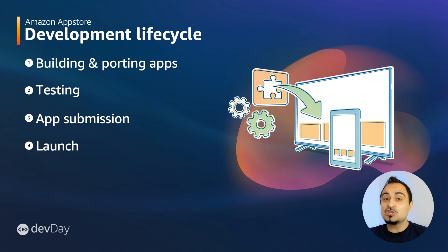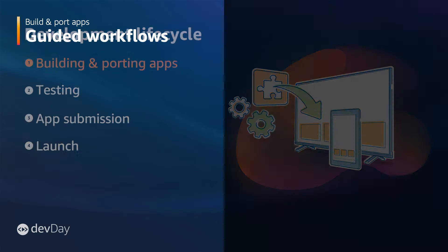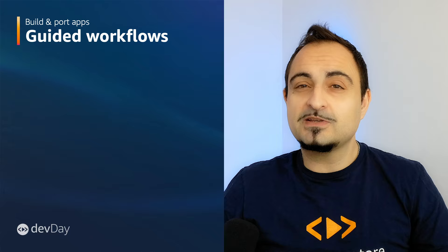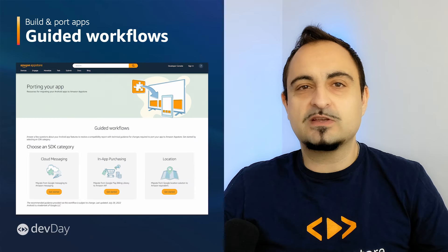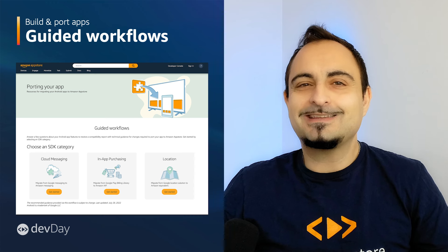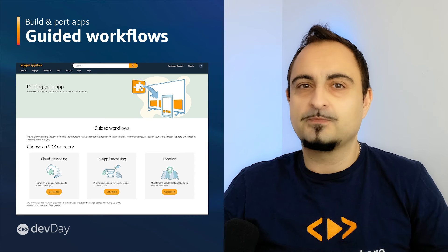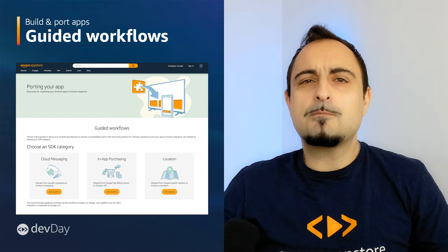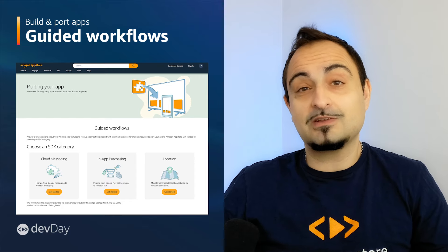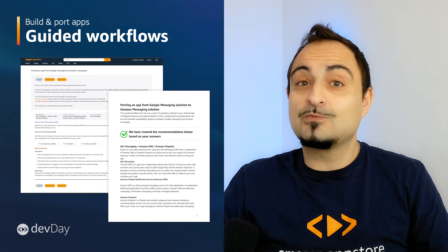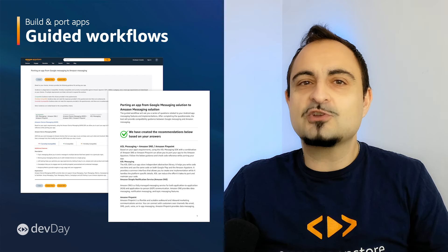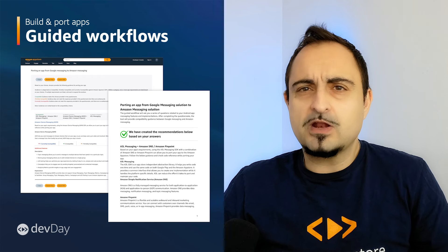Now let's go over the first stage in the App Store development lifecycle: building and porting apps. When developers are building or porting their apps, they first consider what changes are needed to bring new and existing Android apps to the Amazon App Store. Guided Workflows are detailed compatibility reports that outline the level of effort required to launch your app on the Amazon App Store. After answering just a few functional questions about your app, you will receive tailored technical guidance.